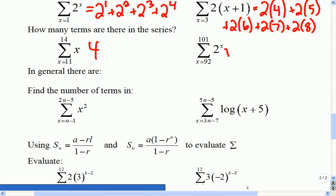Okay, so anyways, if we were to take a look at the next one, from 92 to 101, how many terms would there be there? Ten.